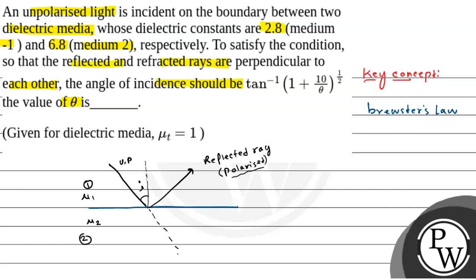Let's say this is our refracted ray, slightly polarized, and the angle between the reflected ray and the refracted ray is 90 degrees.